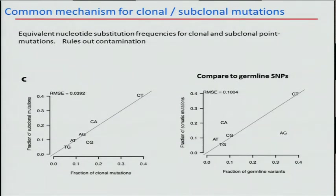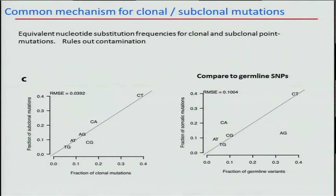This plot was important for us to prove to ourselves that these subclonal alterations are likely real. If they were germline contaminants or machine noise, they would have a different mutant allele spectrum — the frequency of C to T transversions or C to A, et cetera, would be very different. But as you can see on the bottom left, they're very similar. In contrast, the mutant allele spectrum of tumor compared to germline SNPs looks very different, confirming that the subclonal and clonal mutations in ovarian cancer have the same fingerprint.